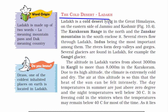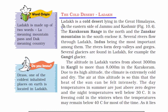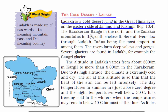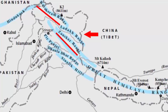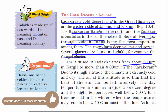Moving on from the Sahara Desert, let's read about Ladakh, the cold desert. Ladakh is a cold desert lying in the Great Himalayas on the eastern side of Jammu and Kashmir. It is blocked by the Karakoram range in the north and the Zanskar mountains in the south. Several rivers flow through Ladakh, with the Indus being the most important. The rivers form deep valleys and gorges. Several glaciers are found in Ladakh, for example the Gangotri glacier. There are many mountain ranges in Ladakh and the heights vary from 3,000 to 8,000 meters.